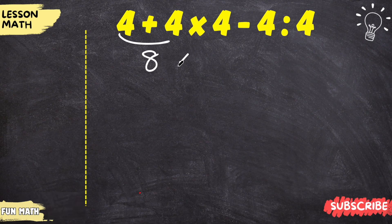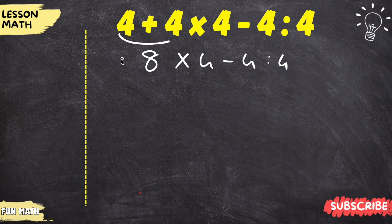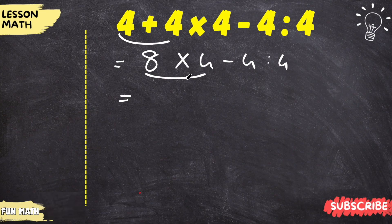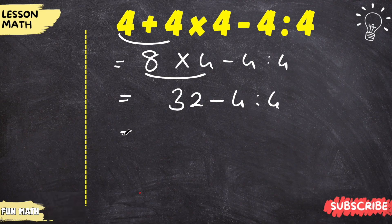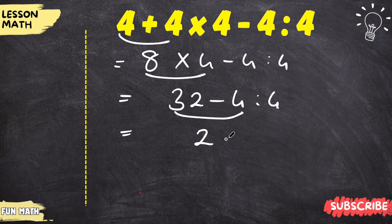4 plus 4 is 8, times 4, 4 divided by 4. Let's look at the operation. We'll continue from here. 8 times 4 is 32, minus 4 divided by 4. We do it again. 32 minus 4 is 28, divided by 4.